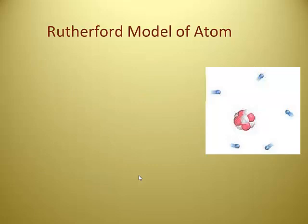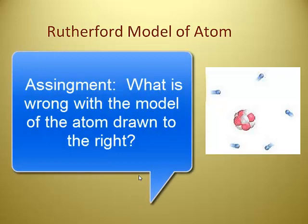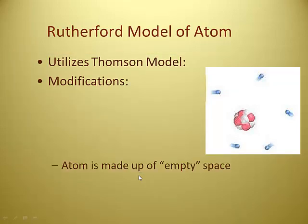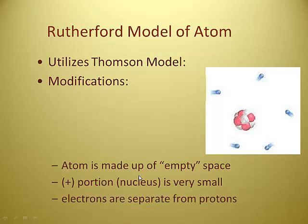That's an artist's interpretation of what Rutherford's model is — the blue things are electrons, and the red and white things are the nucleus. Come to class tomorrow and give us at least one problem with this particular model. So this modifies the Thompson model: the atom is now mostly empty space, the positive nucleus is extremely small, and the electrons are separated from the protons. Thompson's model is gone — usurped by his student Rutherford. Rutherford says there's a little heavy core — a nucleus — at the center of an atom, like a peach pit.